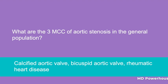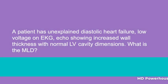A patient has unexplained diastolic heart failure, low voltage on EKG, and an echo showing increased wall thickness and normal left ventricular cavity dimensions. What is the most likely diagnosis? Cardiac amyloidosis.